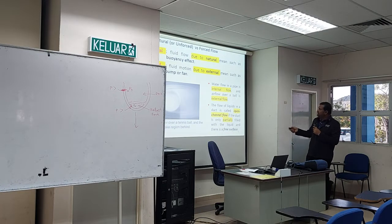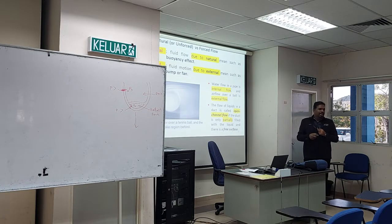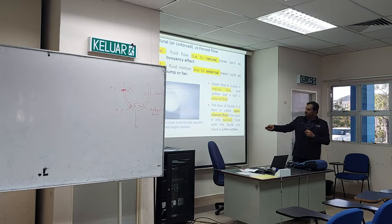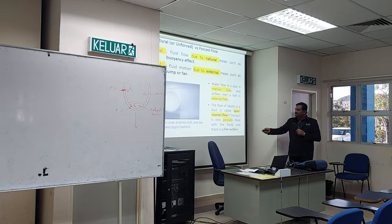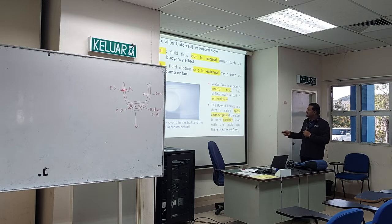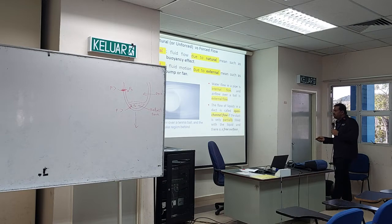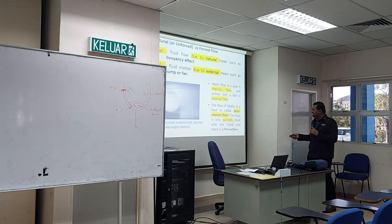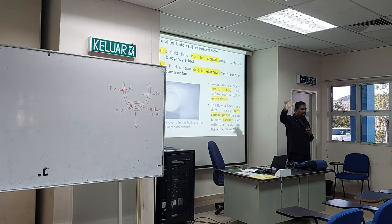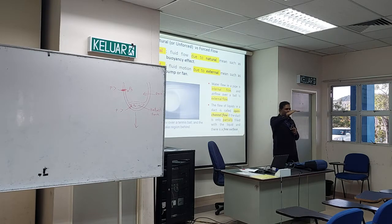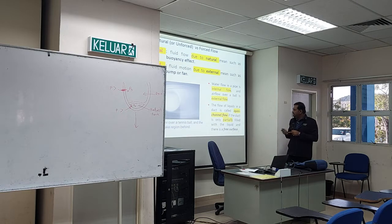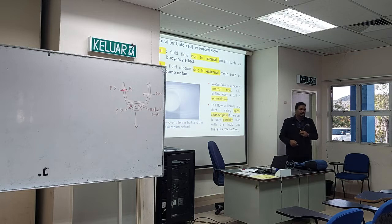Internal flow is fluid moving inside a pipe. External flow is aerodynamic — like air flowing around the sides of a ball without penetrating it. If the fluid is inside, it's internal flow; if it's outside the body of a car or object, it's external flow. Open channel flow is when a duct is only partially filled with liquid — like a longkang — it has a free surface.